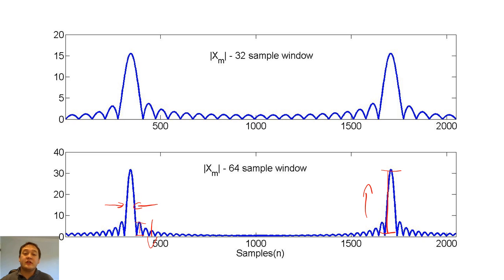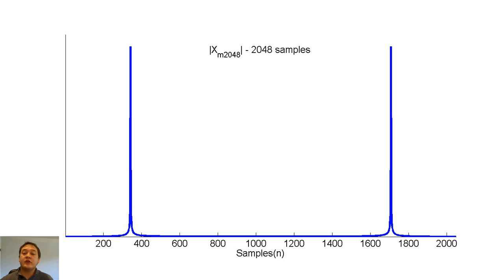As the window size becomes very large, the DFT of our cosine will become a very good approximation of the two impulse functions.